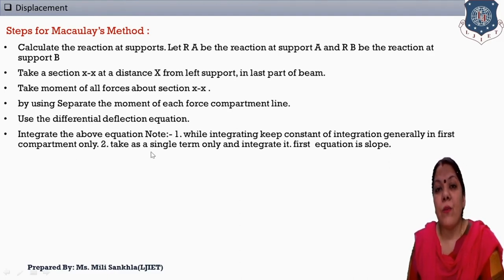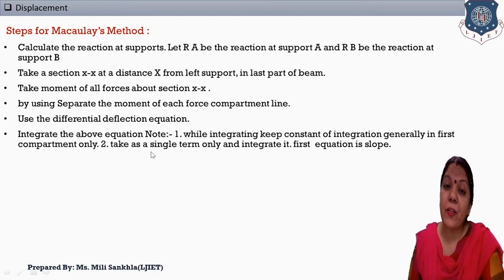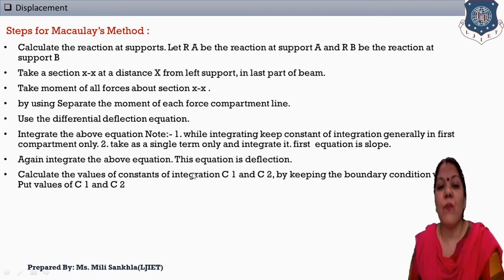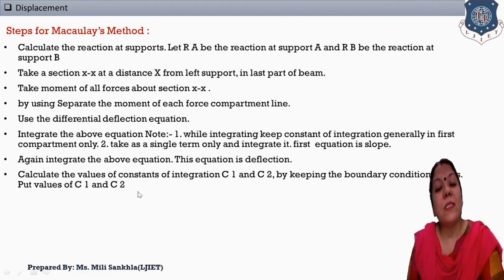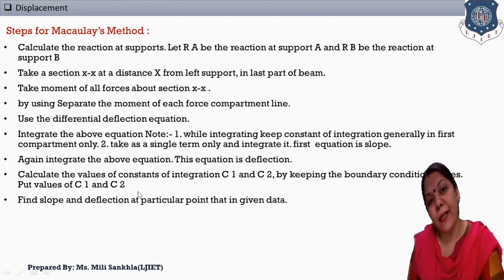Next, integrate the above equation. While integrating, keep the constant of integration generally in the first complementary term only. When we integrate the differential equation, we get the equation of slope — in this first equation we add constant C1. Integrating again gives the equation of deflection, to which we add constant C2. Then find the values of C1 and C2 by applying the boundary conditions, and finally find the slope and deflection at the given particular point.